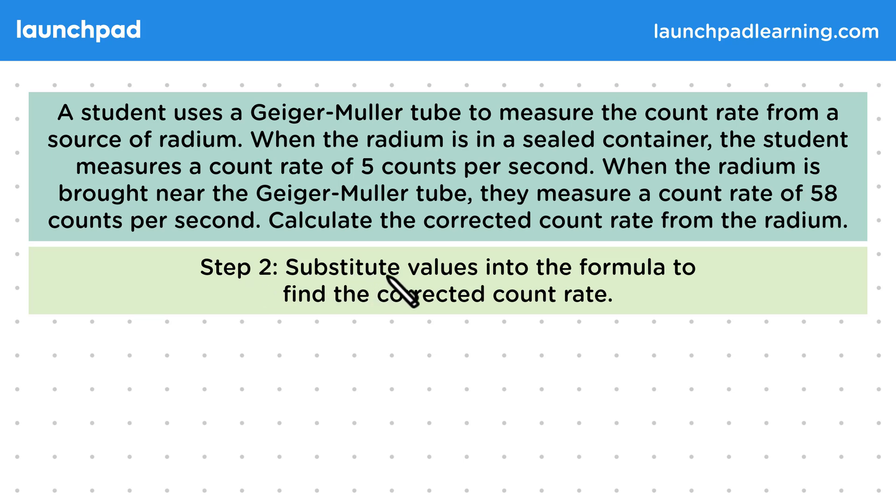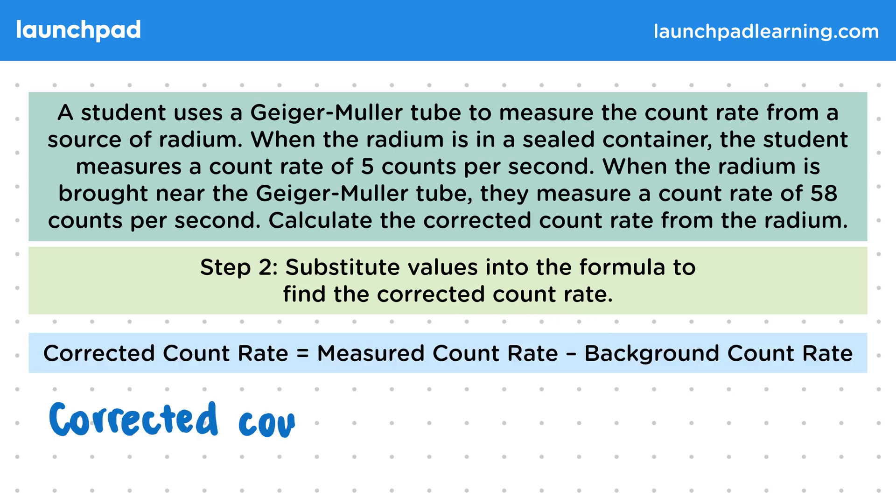For step two, let's substitute the values into the formula to find the corrected count rate. So the corrected count rate is 58 minus 5, giving us 53 counts per second.